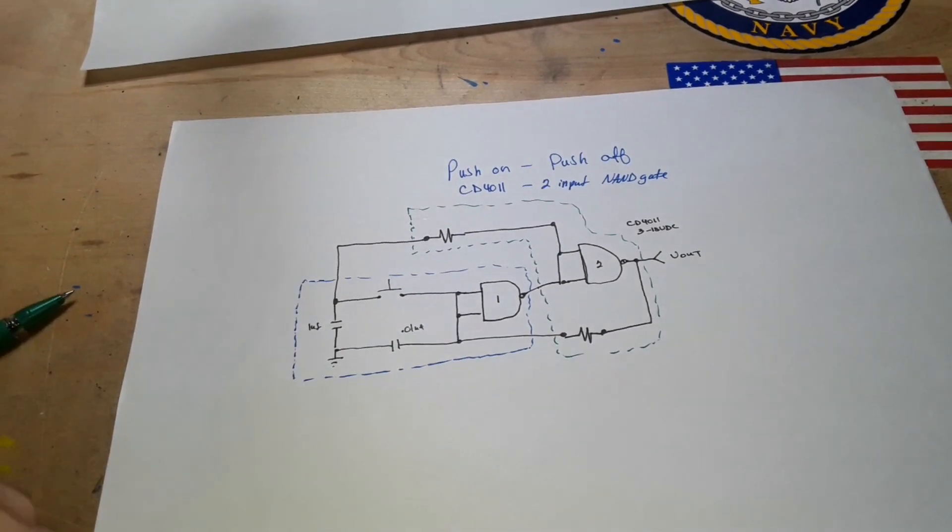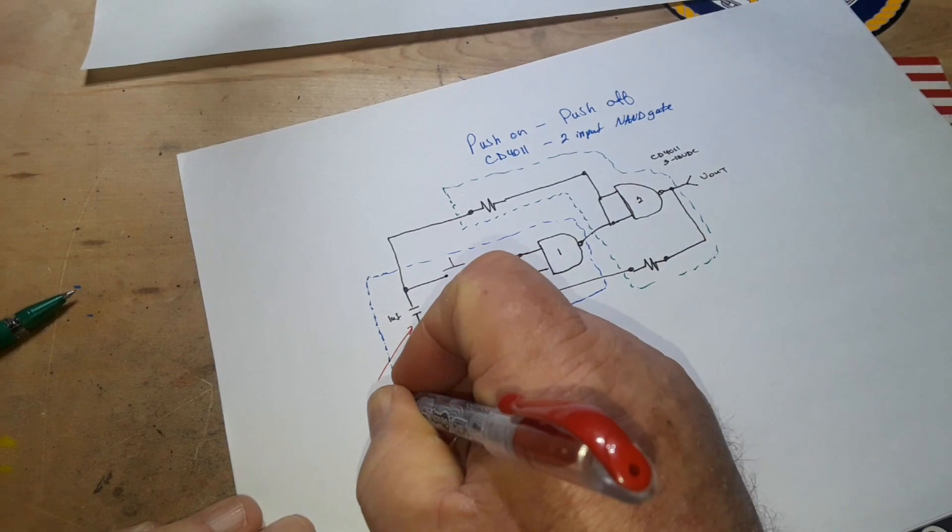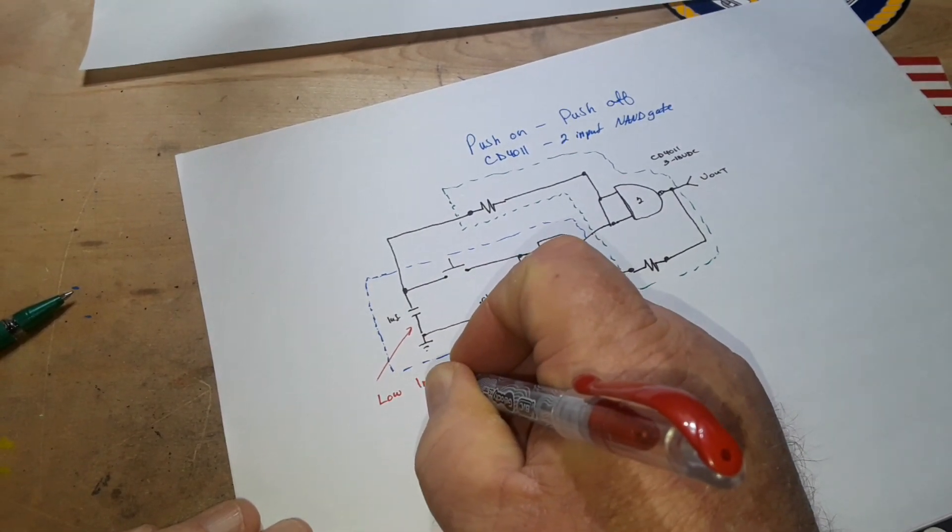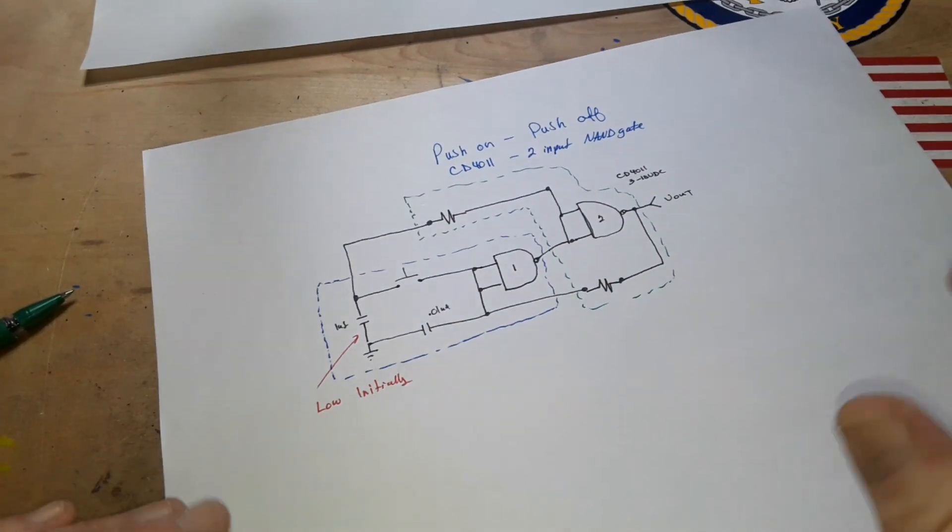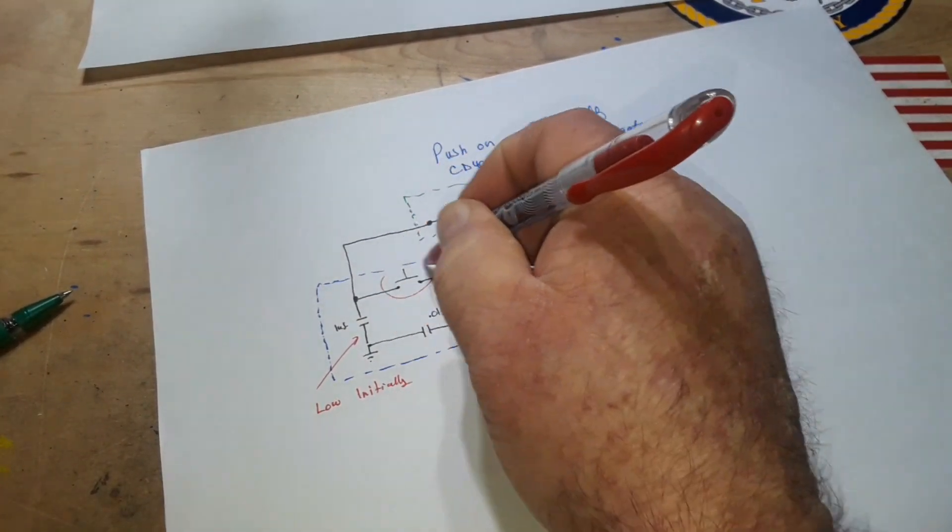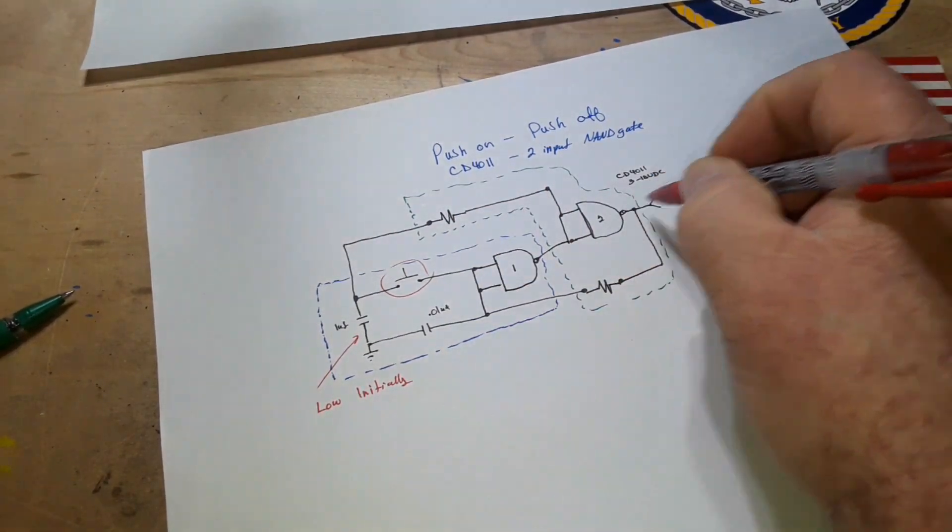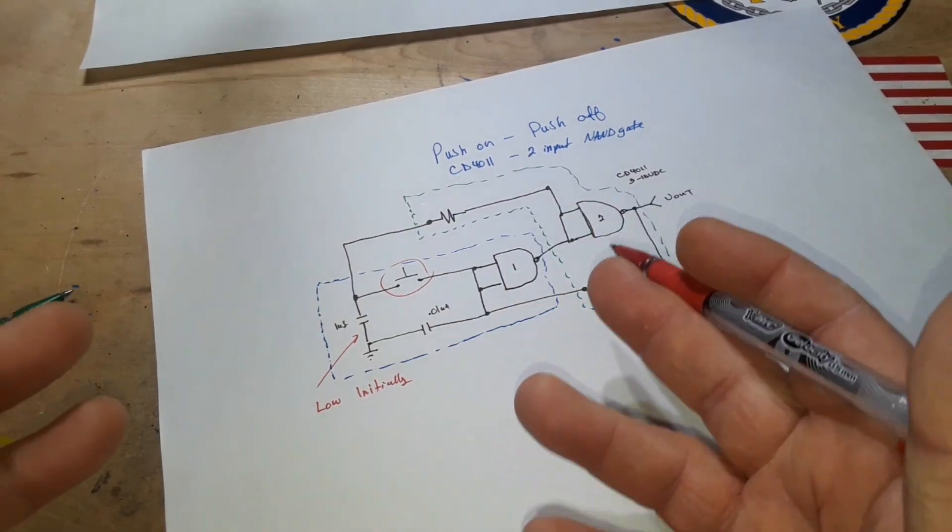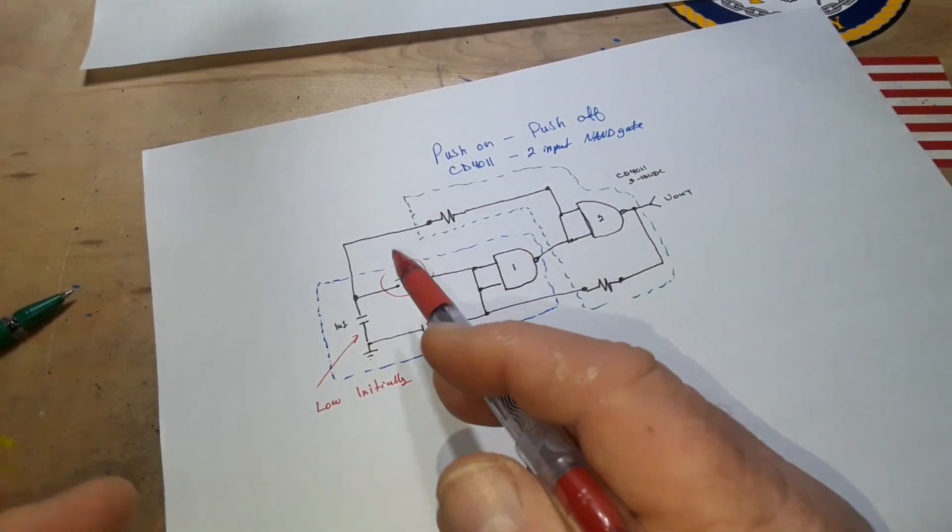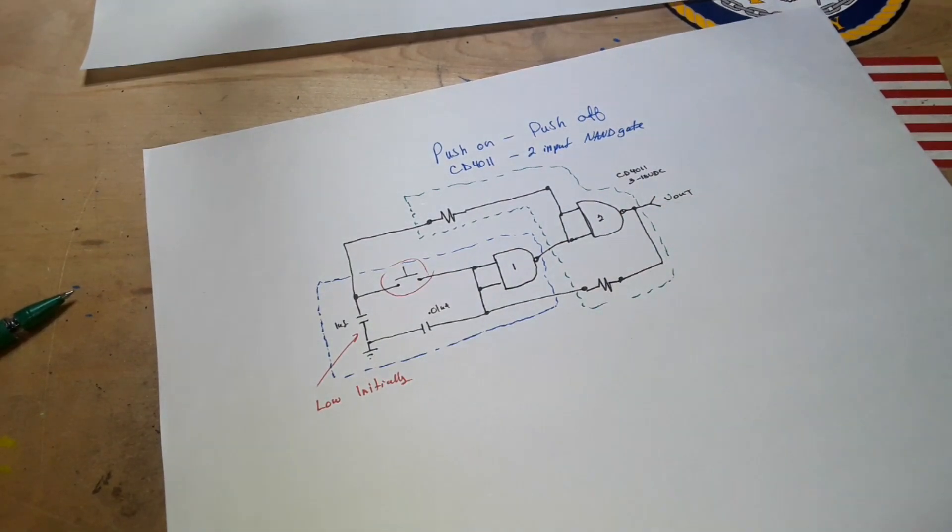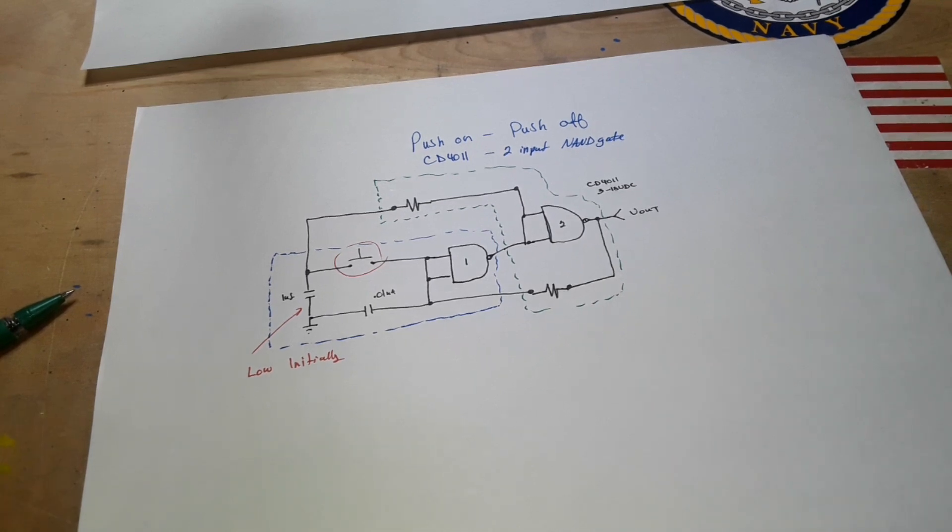Let me write that down here. So this capacitor is going to keep the gate low initially, but when you press the button it's going to go high. And basically what we've done is we've set up these NAND gates as kind of a flip flop. So once it's high, next press it's going to go low and it's just going to keep swapping back and forth between that.